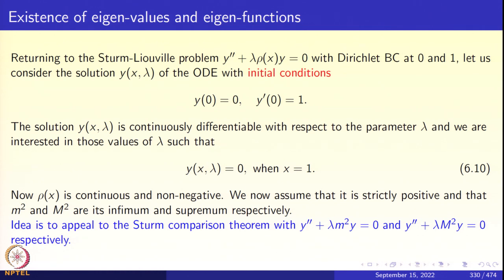Now let us come to the important result. We return to the Sturm-Liouville problem: y double-prime plus lambda rho(x) y = 0 with Dirichlet boundary conditions y(0) = 0 and y(1) = 0. Let us look at the solution y(x, lambda) of this differential equation with initial conditions y(0) = 0 and y-prime(0) = 1. There is a parameter lambda appearing, which is why the solution is a function of two variables x and lambda. This solution depends continuously—and in fact differentiably—on parameters; these are general theorems from ordinary differential equations. Picard's existence-uniqueness theorem guarantees that the solution, when parameters are present, is continuous, differentiable, and analytic with respect to those parameters.